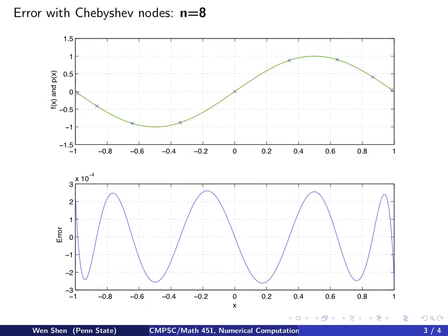Let's increase the number n to 8. So we double it. So we have 9 points. So the Chebyshev nodes are marked by the x sign here.